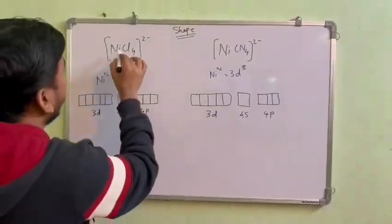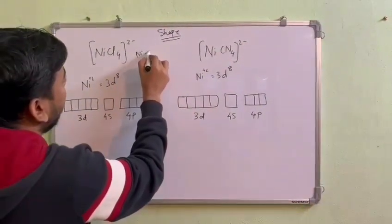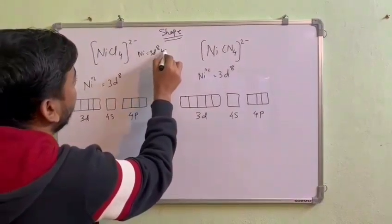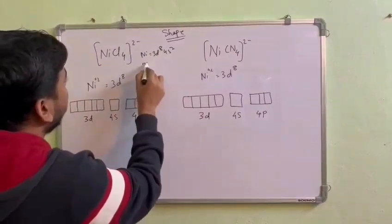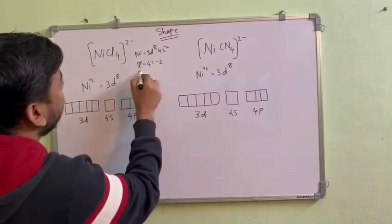For NiCl4^2-, nickel is 3d^8 4s^2. Here, if I take nickel x minus four equals minus two, so x equals plus two. So nickel plus two, that means 3d^8.